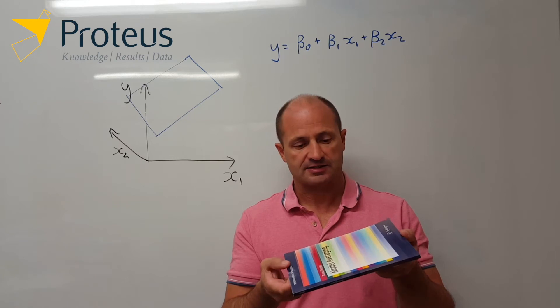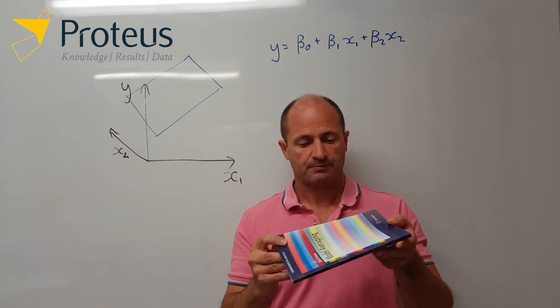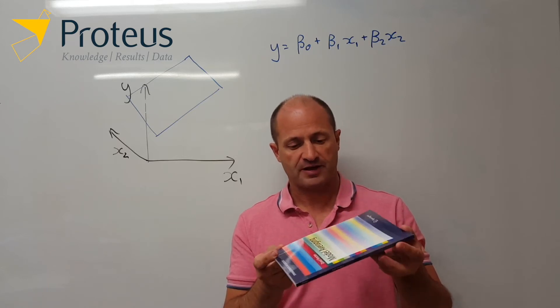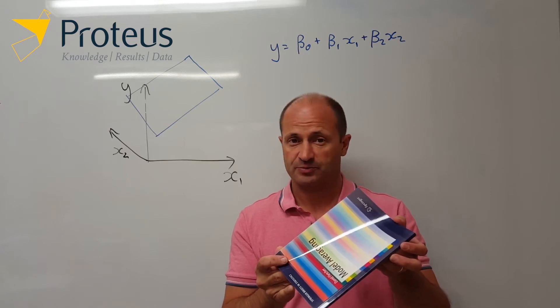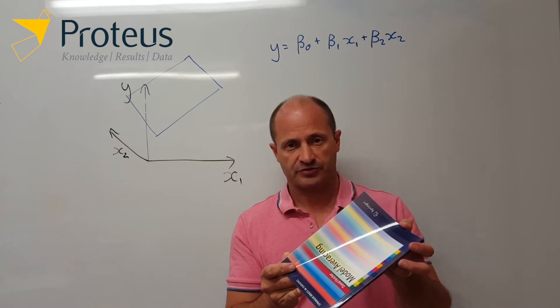An interaction term, what that does is it takes our regression plane and puts a twist in it. So instead of having a flat relationship, what we're saying is that now the effect of x1, for example, depends on x2, or vice versa.